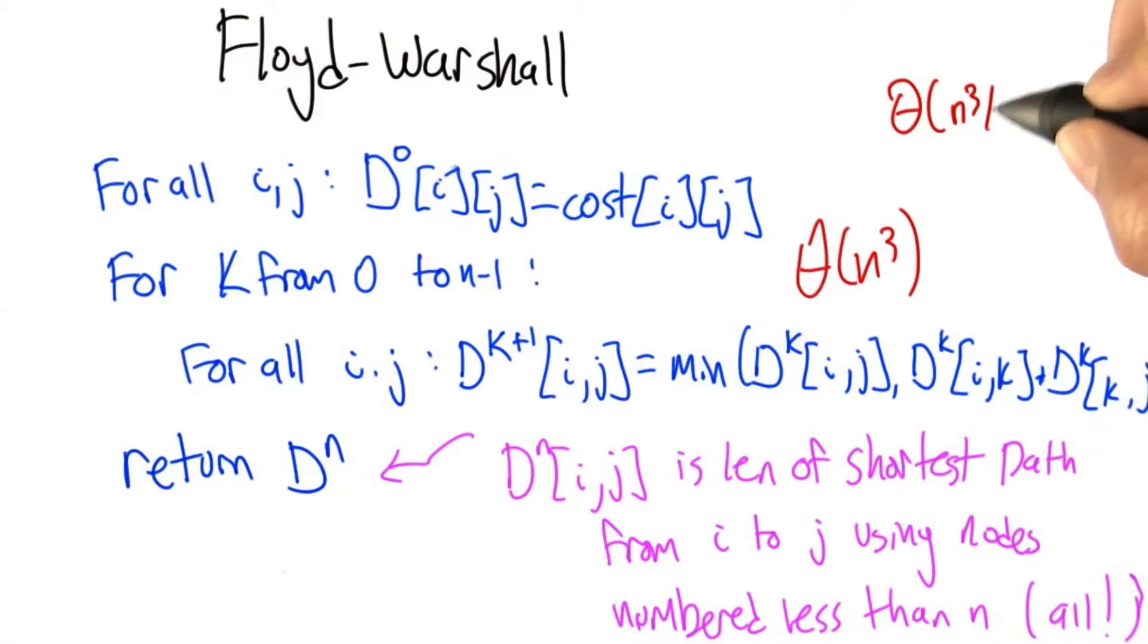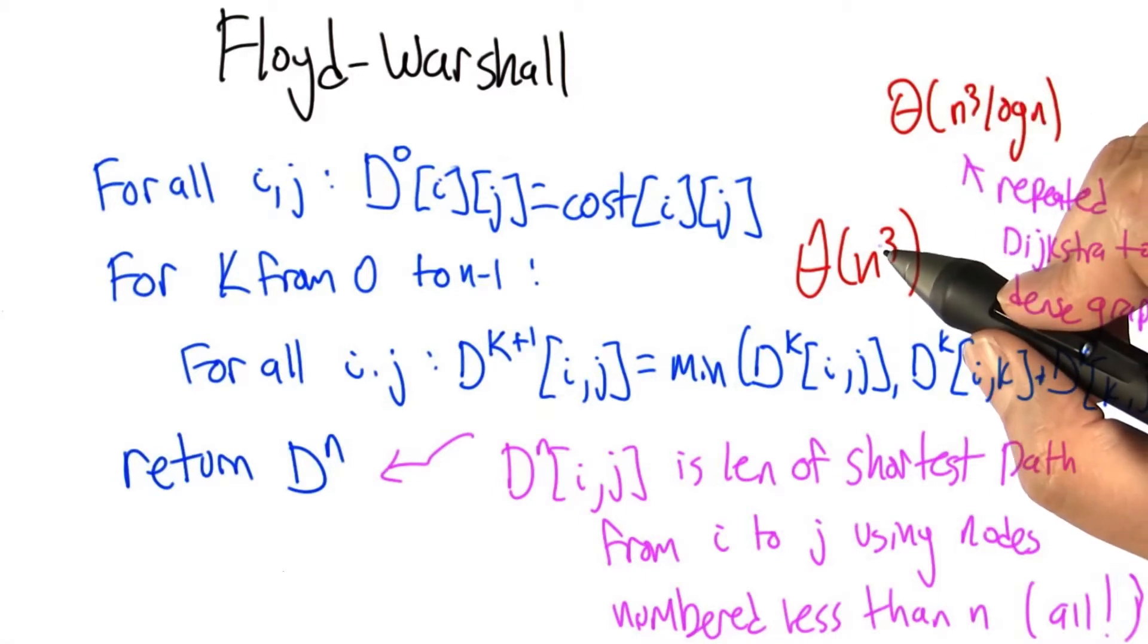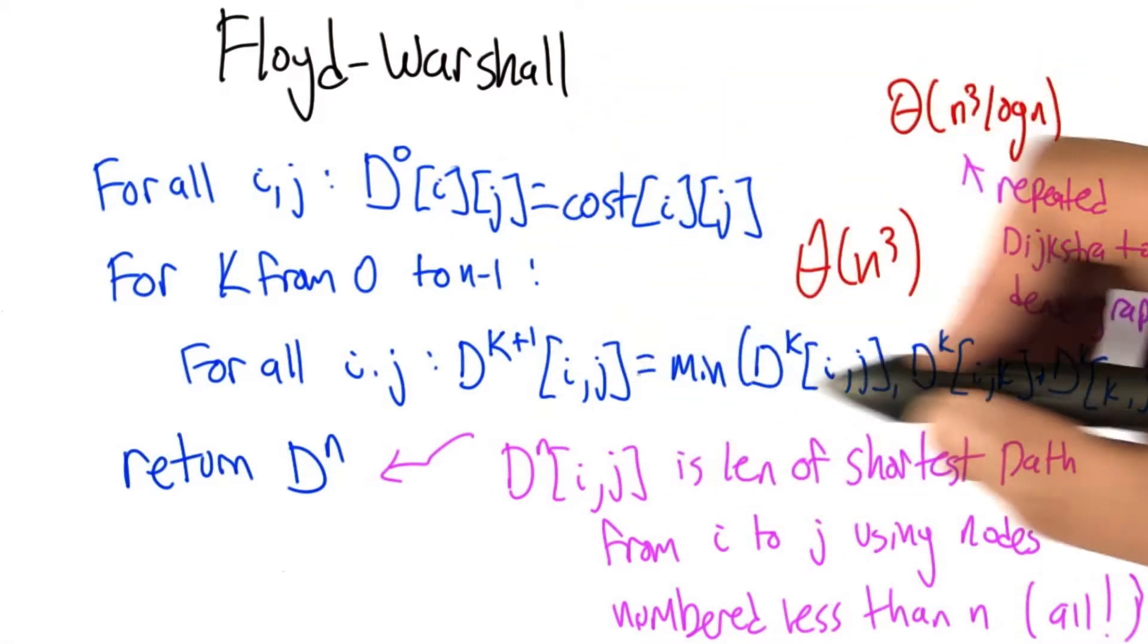This is better than the n-cubed log n we get by applying repeated Dijkstra to a dense graph. So for a dense graph, you're better off using Floyd-Warshall n-cubed instead of the n-cubed log n.